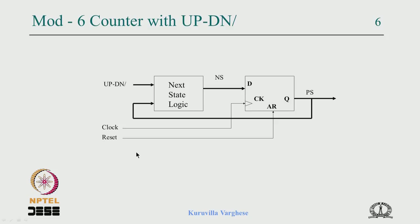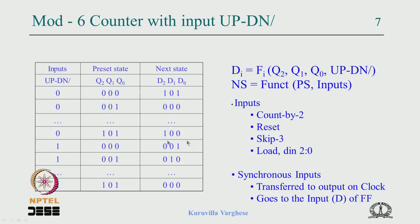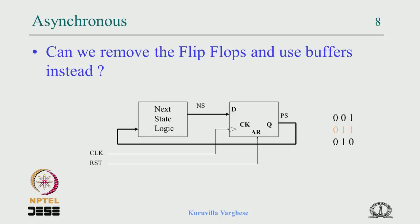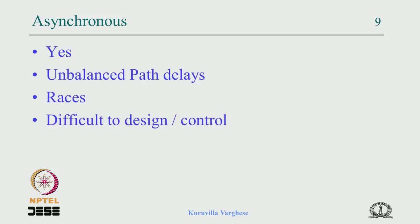We also looked at an up-down control — essentially we modify the logic by giving this as an input, forming a truth table, and deriving the equation for the di's. In this case we find that the next state is a function of present state and inputs. We also considered whether we can get rid of flip-flops and make it asynchronous. It is possible, but there can be output races which are difficult to control. Asynchronous circuits are very fast since there is no clock controlling the path, but they are difficult to control due to unbalanced path delays.